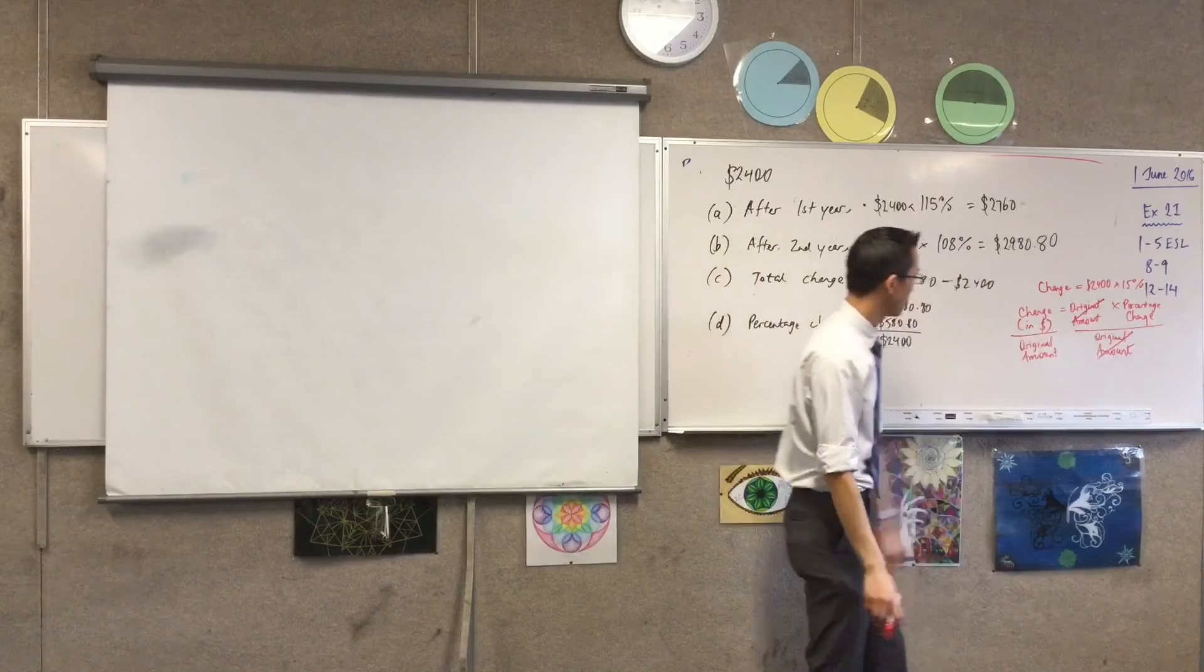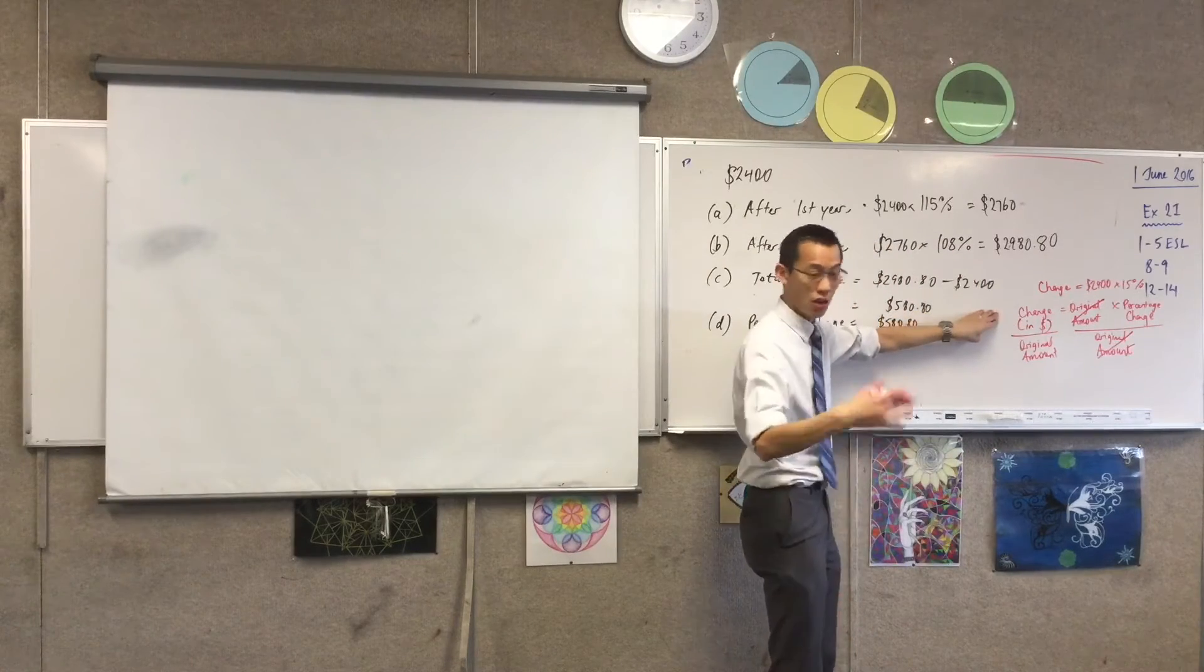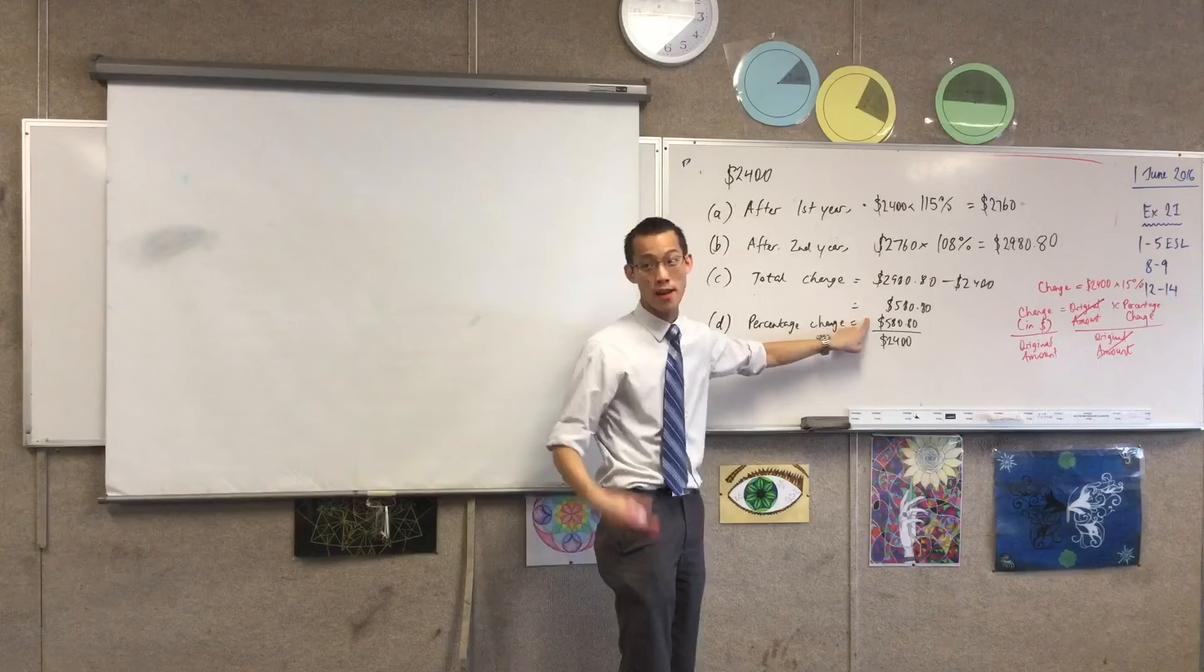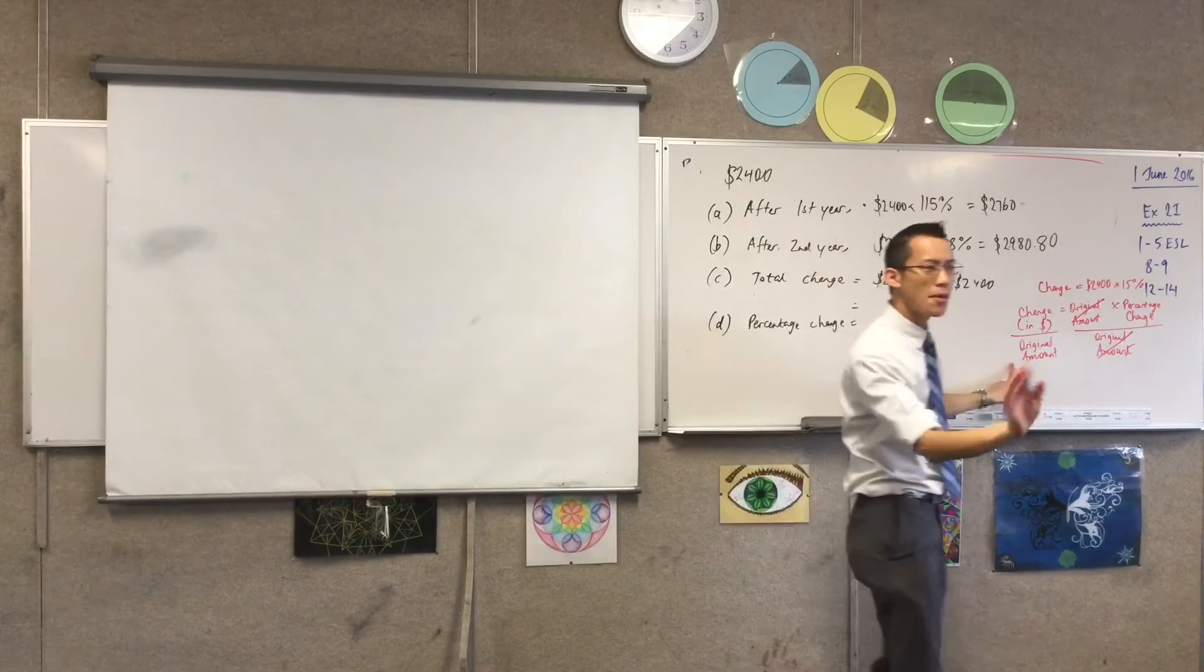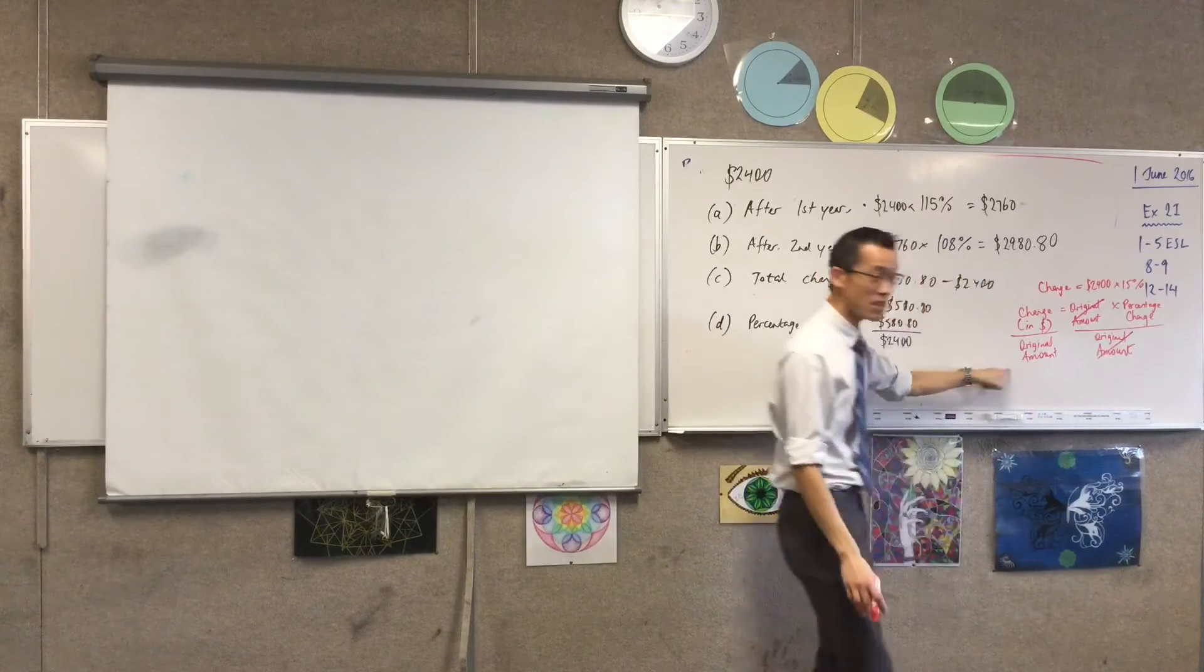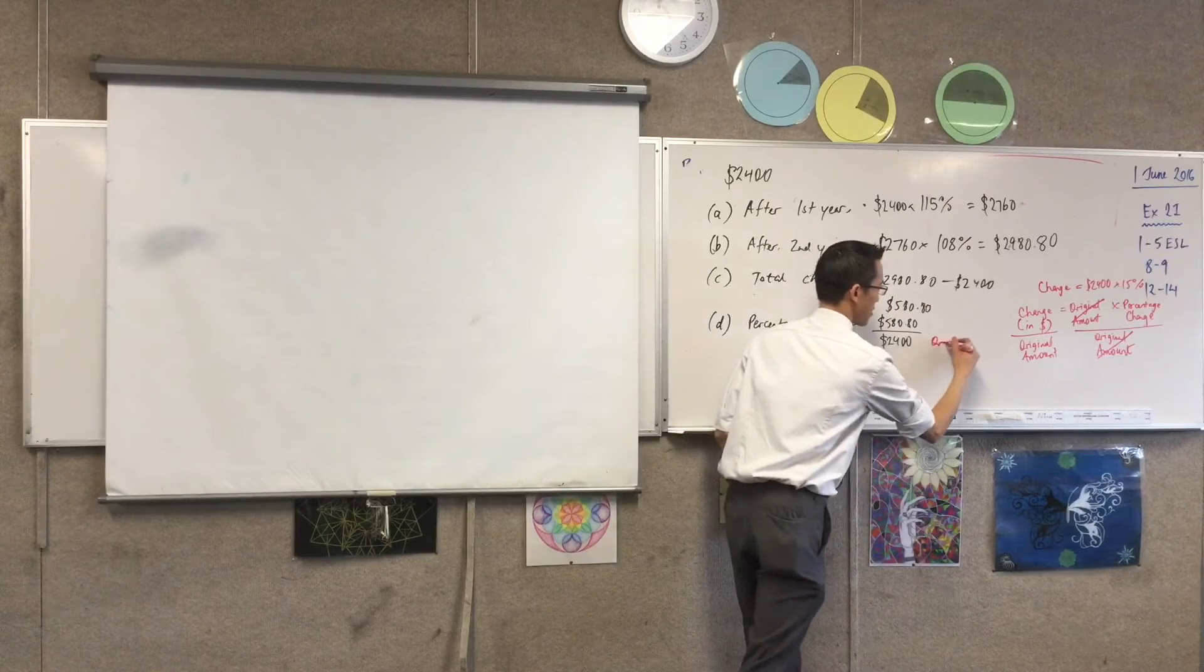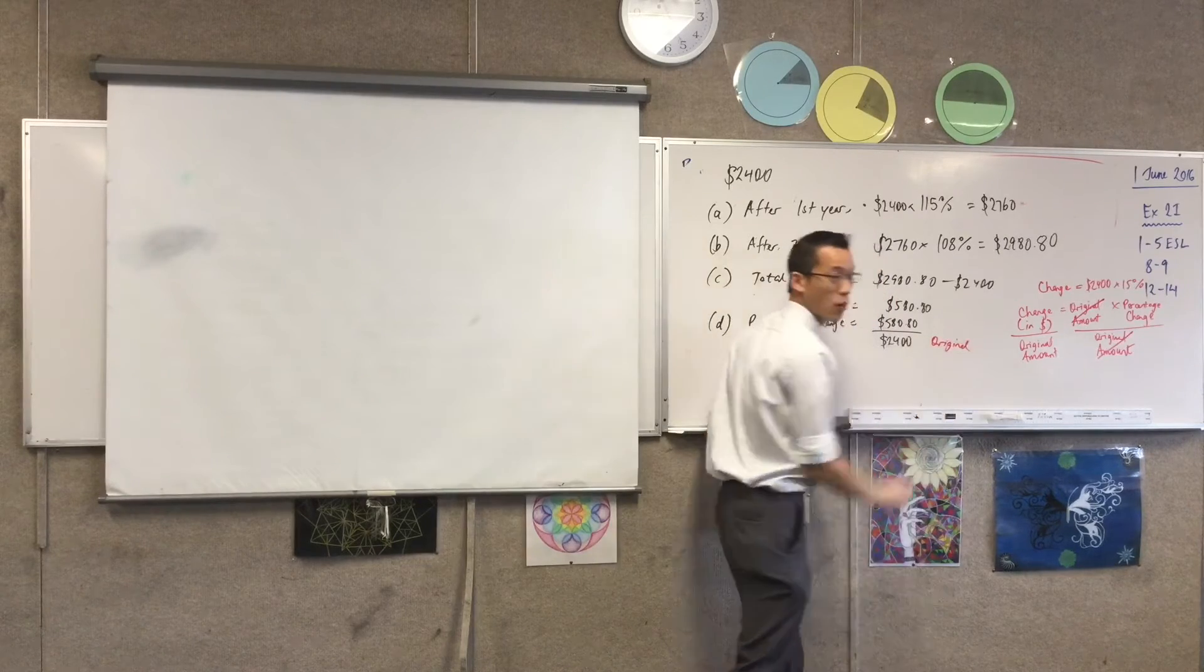is the change in dollars, $580, divided by, not the new amount. It's not the new amount you're dividing by. It's the original. And that's why that's this number, and here's 2,400. Okay?